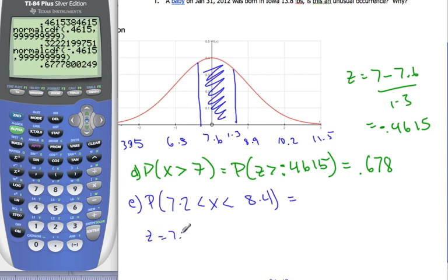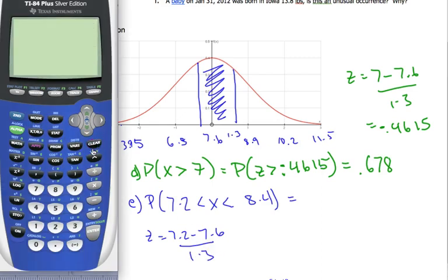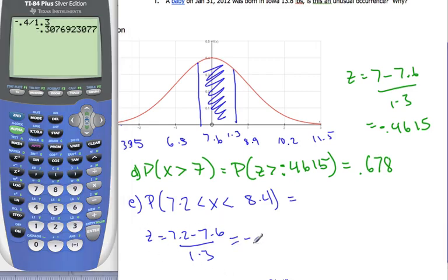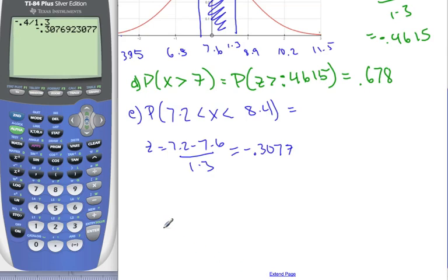So, my first set will be 7.2 minus the 7.6 over 1.3, which will be negative 0.4 divided by 1.3. And I get equal to negative 0.3077. And this, I'm going to keep to more than 3 significant figures, because when we do the final calculation, I want that to be completely accurate.